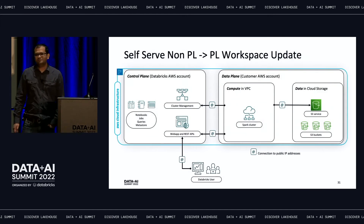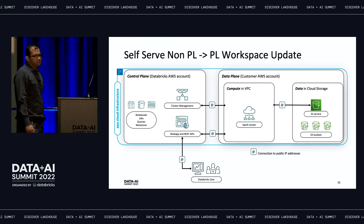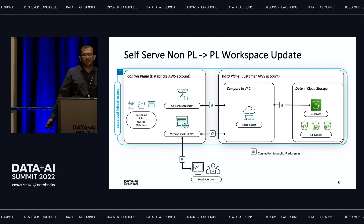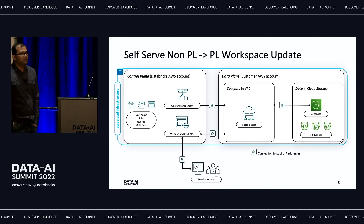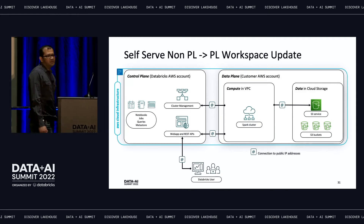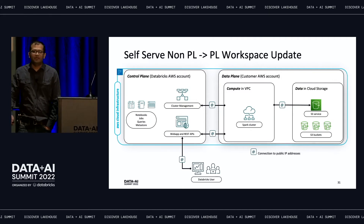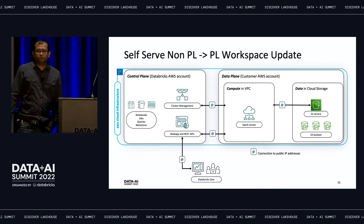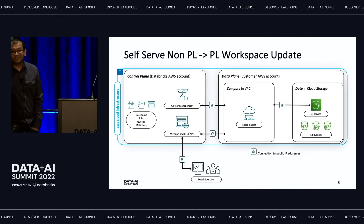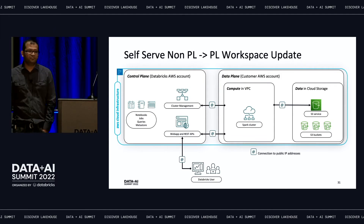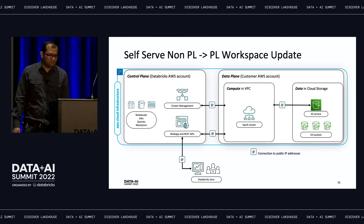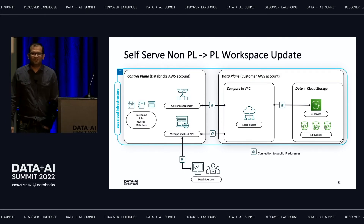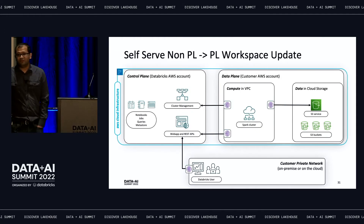One of the common customer requests we get is to convert their existing E2 workspace running production workloads into a privately enabled workspace — customers want to use PrivateLink for enhancing security as well as simplifying the network between their on-prem network and Databricks. We're excited to announce that we'll be providing support for customers to self-serve — updating their existing workspaces from non-PrivateLink to PrivateLink via existing APIs as well as the account console.